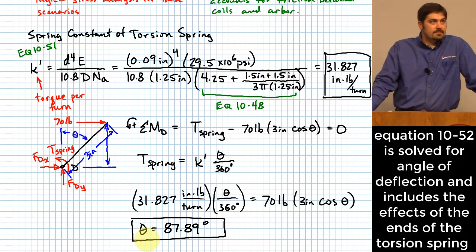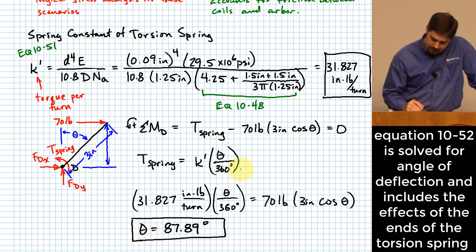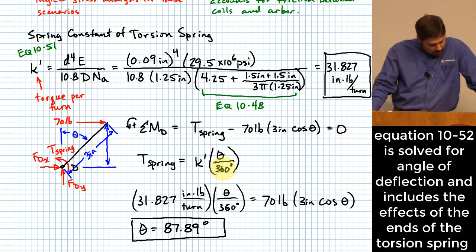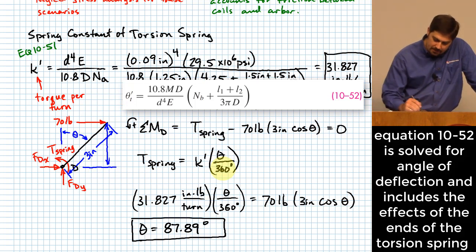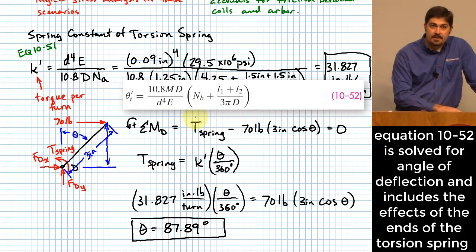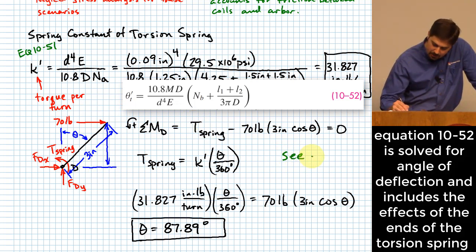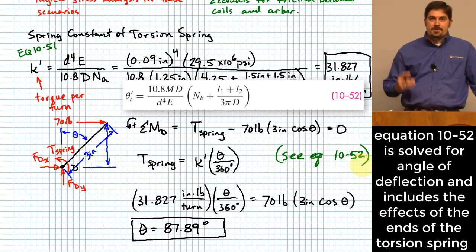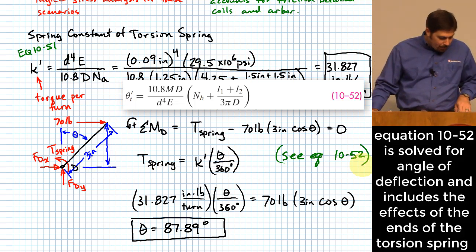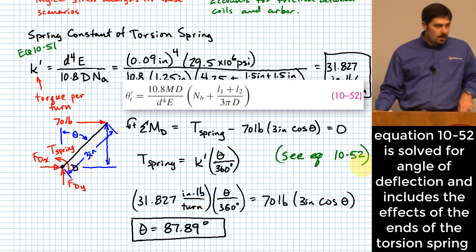Regarding the torque-spring equation: the closest reference in the book is equation 10-52, which combines K and gives angular deflection in terms of applied moment (torque M). What we used here is consistent with that formulation.